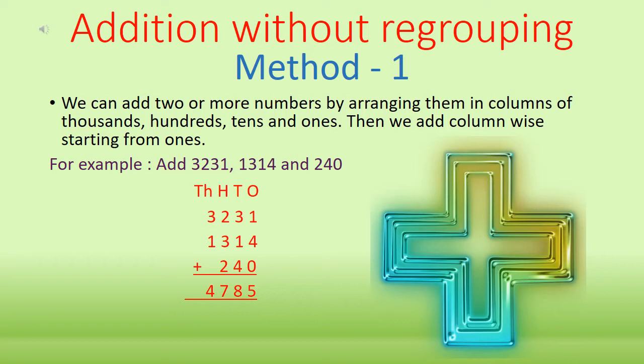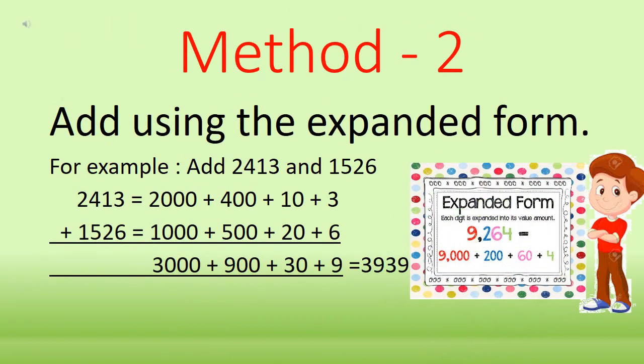This is the first method of addition — arranging the numbers in columns. The second method of addition is adding the numbers using their expanded form. For example, let's take 2,413 and 1,526. First of all, we will write their expanded form.